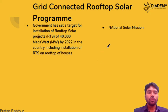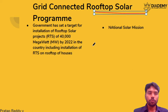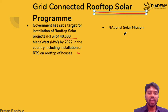Grid Connected Rooftop Solar Program: The government has a target for installation of rooftop solar projects of 40,000 megawatts by 2022. We have the National Solar Mission, which is one of the missions under the NAPCC. The target is that 150 gigawatts should be produced from solar energy sources.